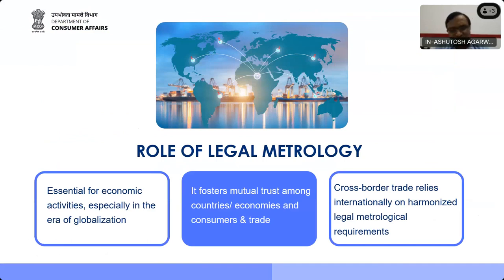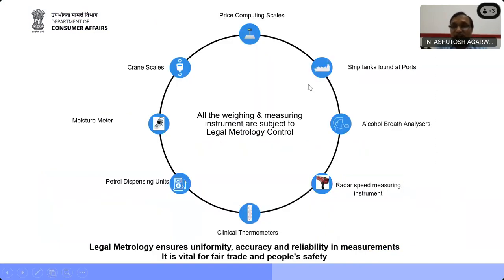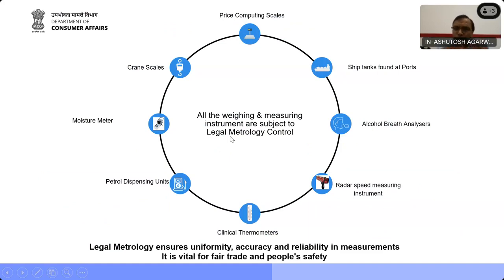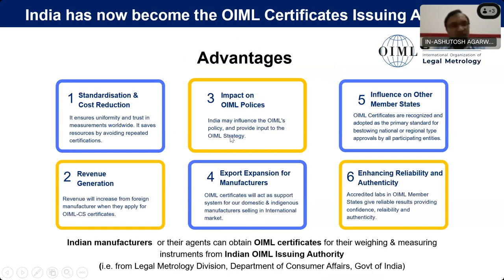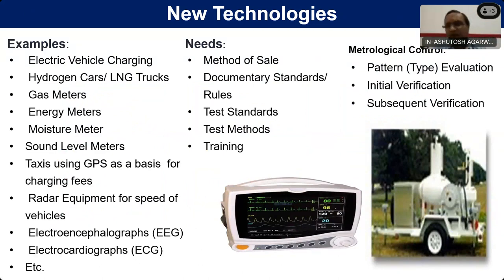Legal Metrology is essential for economic activities, especially in this era of globalization. It fosters mutual trust among countries, economies, consumers, and trade. It also supports cross-border and internationally harmonized Legal Metrology requirements. There are a large number of weighing and measuring instruments in the Legal Metrology system — radar speed measuring instruments, breath analyzers, ship tanks at ports, moisture meters, train scales, petrol and diesel meters — all types of weighing and measuring instruments used for transaction and protection are covered under Legal Metrology.